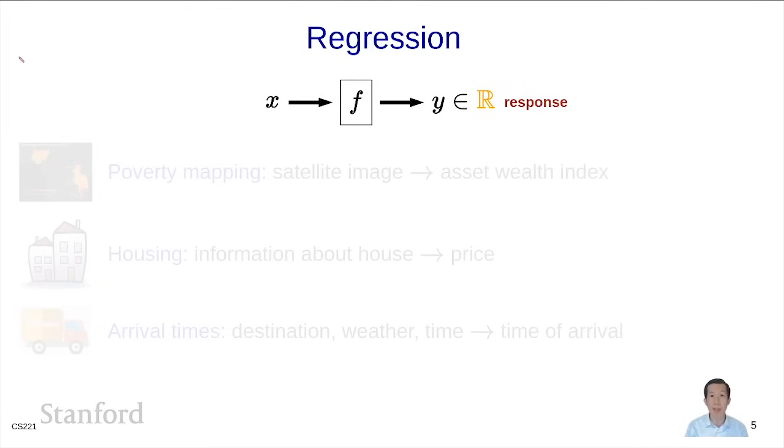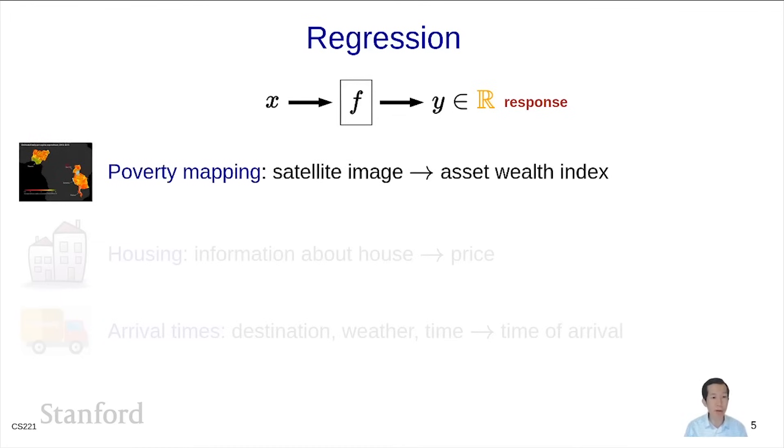Here are some examples of regression problems. In poverty mapping, x is a satellite image, and you're trying to predict y, which is the asset wealth index of the homes in that area in the satellite image.